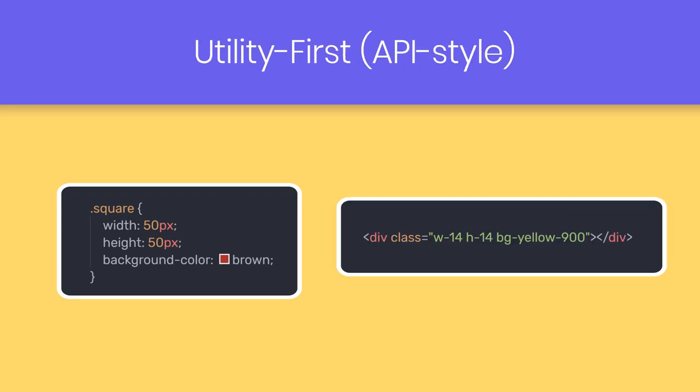Let's take a look at a very simple example. If I were to give you a quick CSS assignment to make a square with a background color brown, typically you would create a square class and specify CSS properties with width 50px, height 50px, and background color brown. As you know, it works.